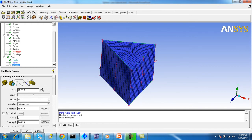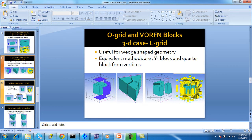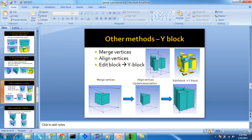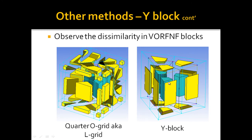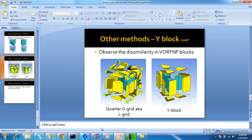Now I will explain the second method: the Y-block. In the Y-block method, we create the main block, then merge vertices, then align vertices, then go to edit block and Y-block — we get the same shape but the difference is in the warframe blocks.